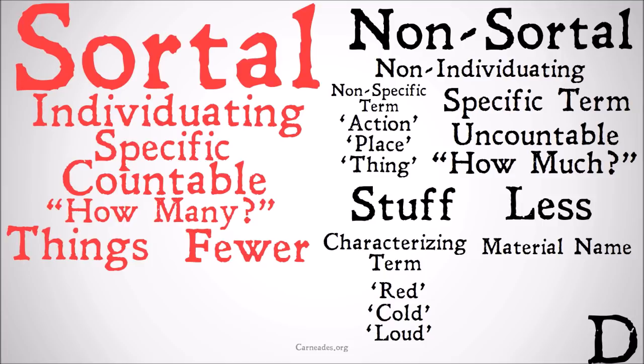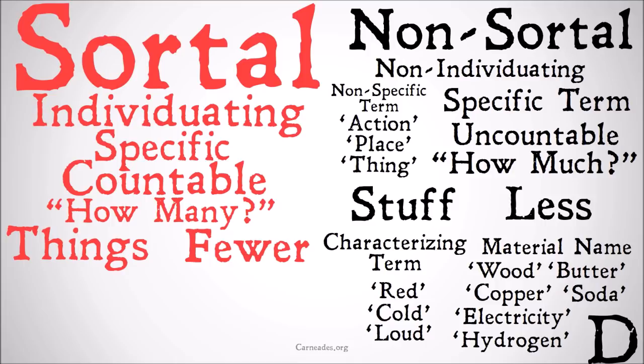Sortals, on the other hand, have to individuate — make something specific enough so it can be counted — like 'cat,' 'puppy,' 'cup,' 'car,' 'tree,' or 'baby.'